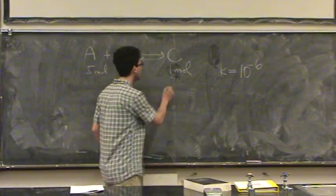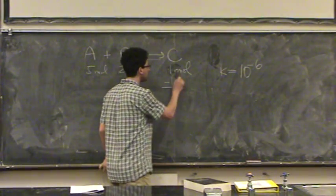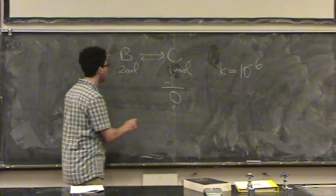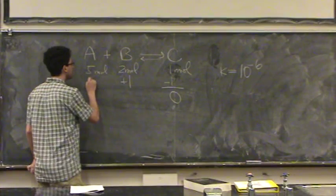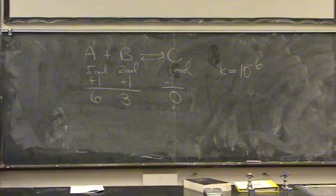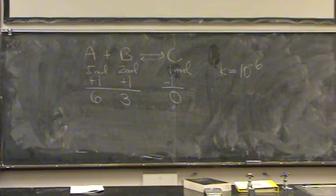So I've got to do stoichiometry and react the smallest. There's only one product. So it all reacts away. And it adds, in this case, to the reactants, because it's going to the left, so it's 6 and 3, moles, 0, for the products.